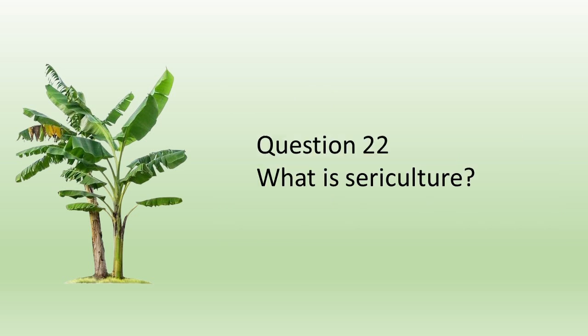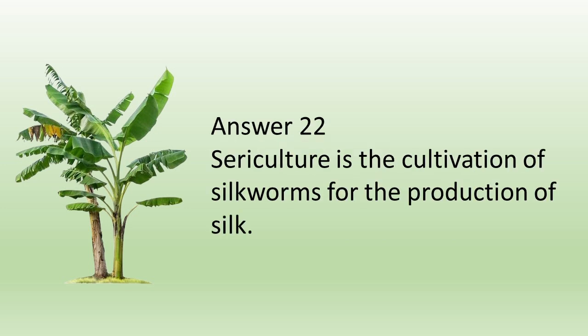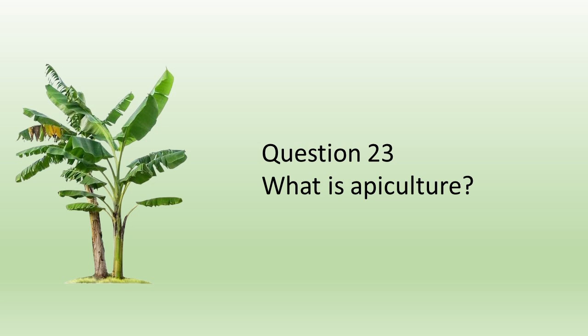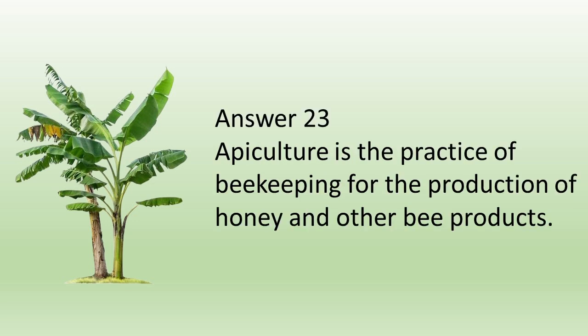Question number twenty two: What is sericulture? Answer: Sericulture is the cultivation of silkworms for the production of silk. Question number twenty three: What is apiculture? Answer: Apiculture is the practice of beekeeping for the production of honey and other bee products.